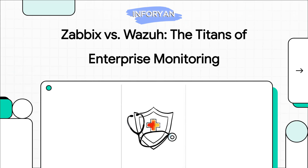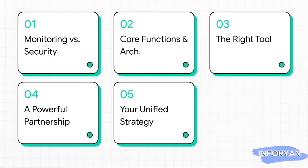Welcome to The Explainer. Today we're diving into a question that every IT pro wrestles with: how do you keep your systems running perfectly and keep them totally secure? The answer might just be a powerful team-up between two open-source giants, Zabbix and Wazuh. Here's our game plan: first we'll look at their different roles — monitoring versus security — then we'll check out their core functions and architecture, find the right job for each tool, see how they can work together, and wrap it all up with a unified strategy you can actually use.